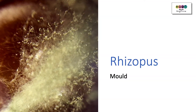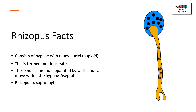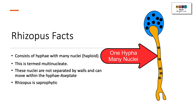One fungus you have to know in great detail is Rhizopus, a type of mould found on bread that's going off and on fruit. It consists of hyphae — tube-like filaments with many nuclei that are haploid. When there are many nuclei it's termed multinucleate. These nuclei are not separated by individual walls and so can move freely within the hyphae, which is termed aseptate.